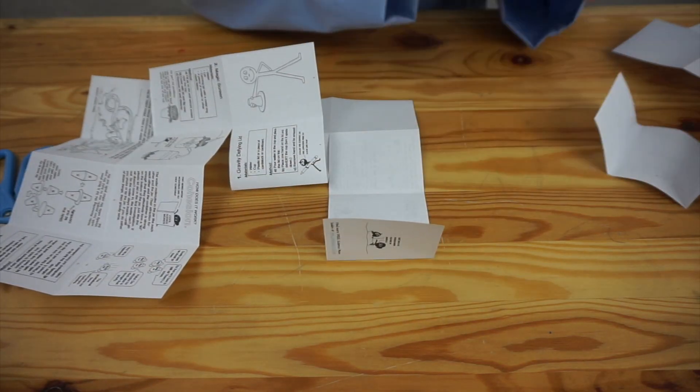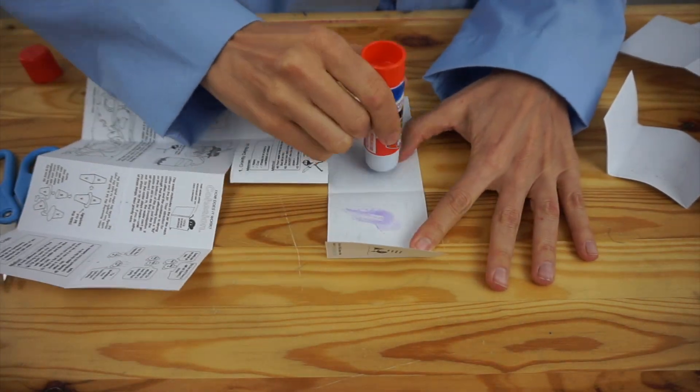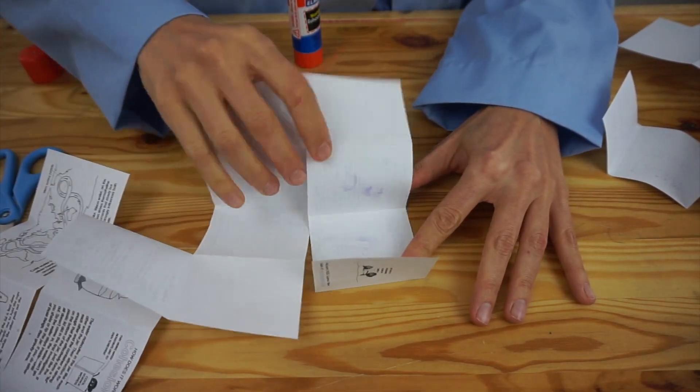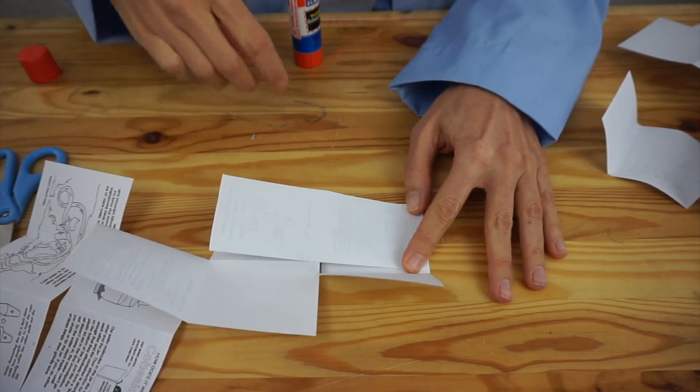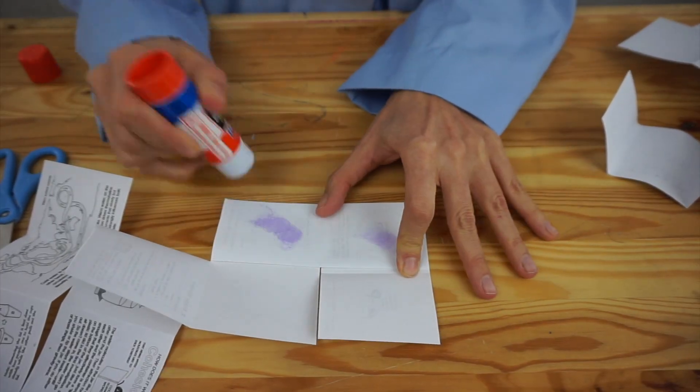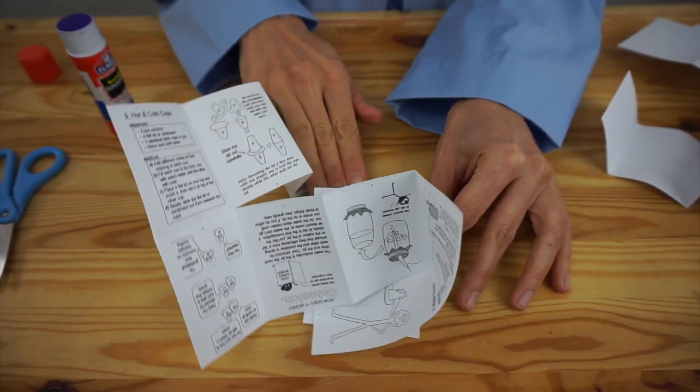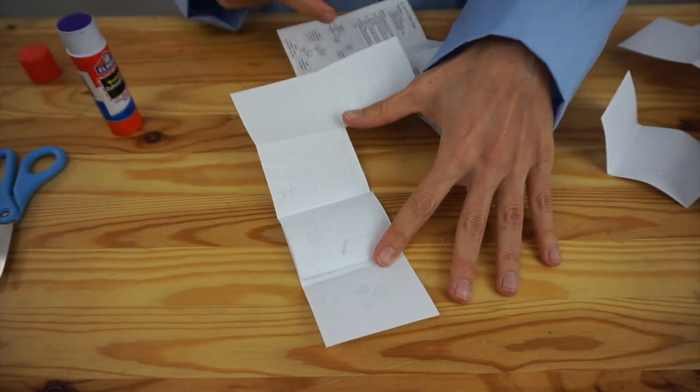And now we're just going to glue the pages together. So you only need a little bit of glue from a glue stick, and you're going to match the next page to that back cover. And then those two pages go together, and so on, and so forth.